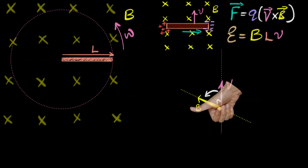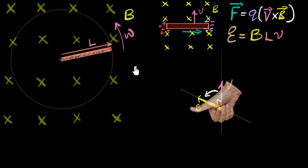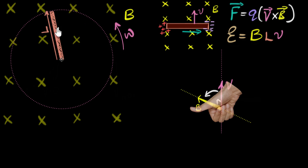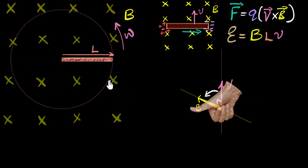Let's look at the animation. As we spin the rod, notice the center hardly moves — it's essentially at rest. However, the tip is moving the greatest distance in a given time and therefore has the highest velocity. As you go away from the center, particles are moving faster and faster. Different parts of this rod are moving with different velocities, so how do we figure out the EMF?